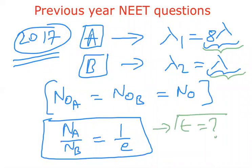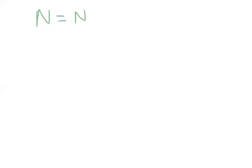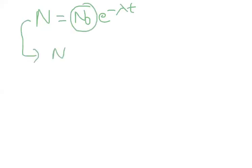We need to find the time taken for the ratio of remaining nuclei Na/Nb to equal 1/e. We know the formula N = N₀·e^(-λt). Since N₀ is the same for both substances, N is proportional to e^(-λt).